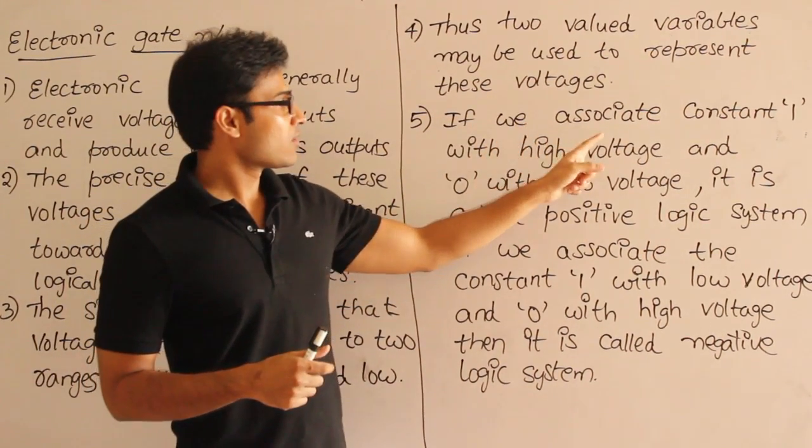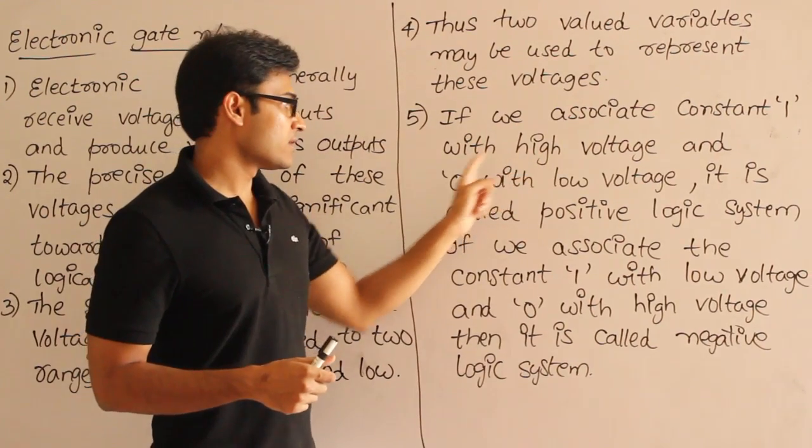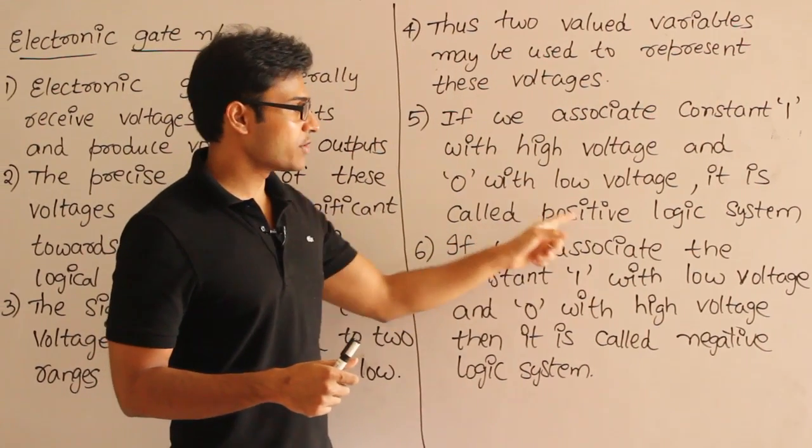If you associate a constant 1 with the high voltage and 0 with the low voltage, it is called positive logic system.